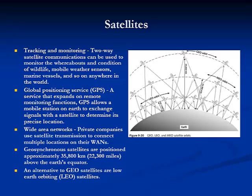Satellites are used primarily for long-distance or wide-range telecommunications, including tracking and monitoring, global positioning, and corporate and government wide area networks. Three major satellite positioning systems are geosynchronous, low orbit, and medium orbiting.